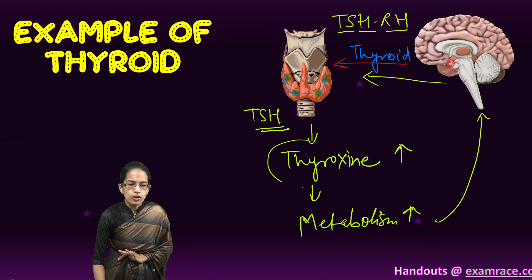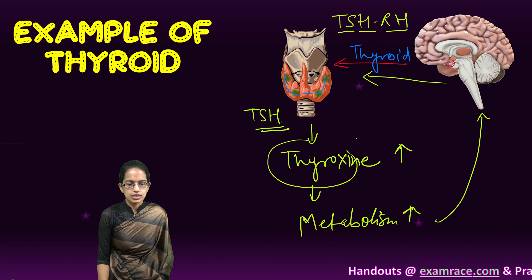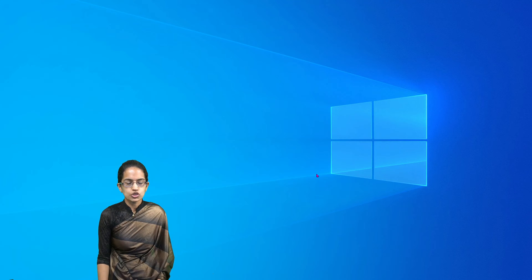TSH and thyroxine release would stop. Finally, the release would stop and metabolism would return to normal. So that is how the negative feedback mechanism works for the thyroid gland.